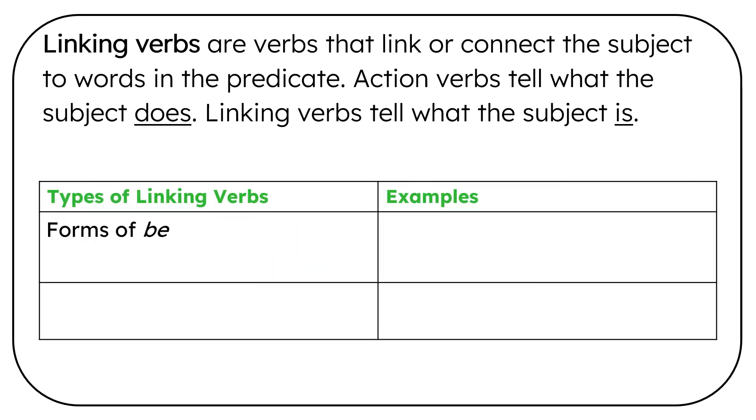Types of Linking Verbs: The forms of be. Examples are be, is, am, was, were, been, being, have been, has been, could be, should be, would be.